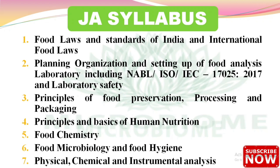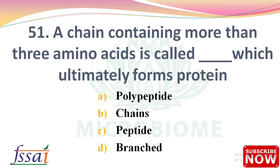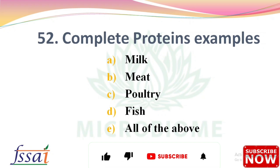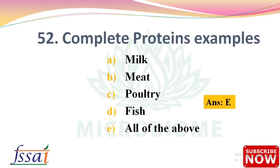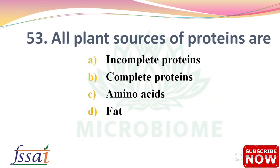Question: A chain containing many amino acids is called dash, which ultimately forms protein. Options: polypeptide, chains, peptide, branch. The right answer is option A, polypeptide. Next: Complete proteins examples — options: milk, meat, poultry, fish, all of the above. The right answer is option E, all of the above: milk, meat, poultry, and fish.